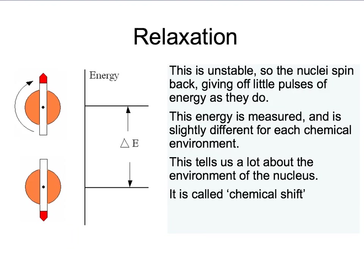However, this is unstable, so the nuclei are pushed back by the magnetic field and flip. And when they do this, they emit a small pulse of energy. We can detect and measure this energy, and it is different for each chemically different nucleus. This process is called relaxation.